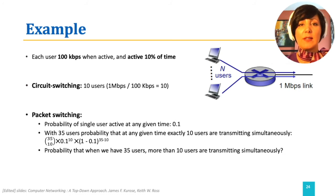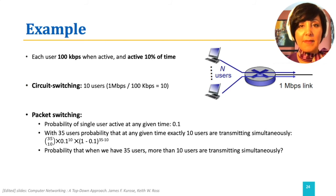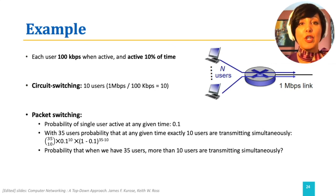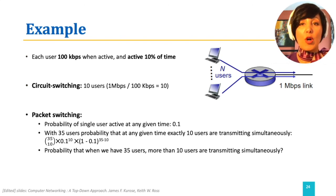Now, consider packet switching. We know that each user is active 10% of the time, so the probability a user is active at any given time is 0.1. Let's consider 35 users. With 35 users, the probability that at any given time exactly 10 users are transmitting simultaneously — and therefore use the link at full capacity — can be calculated by the number of possible permutations of 10 active users, times the probability of 10 users being active, times the probability of the other 25 users not being active. This probability is less than 0.0004. Therefore, 35 users can easily share this network.